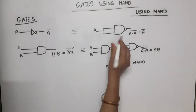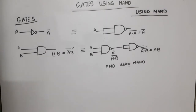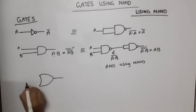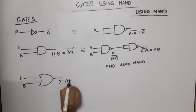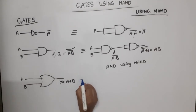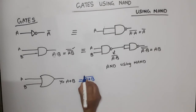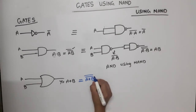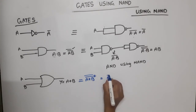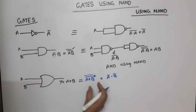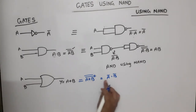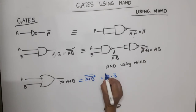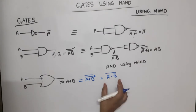Now let's do OR gate. By De Morgan's theorem, A plus B bar becomes A bar dot B bar. The complement of the whole expression converts the plus to dot operation and each variable gets complemented. So the expression we get is A bar dot B bar, bar.